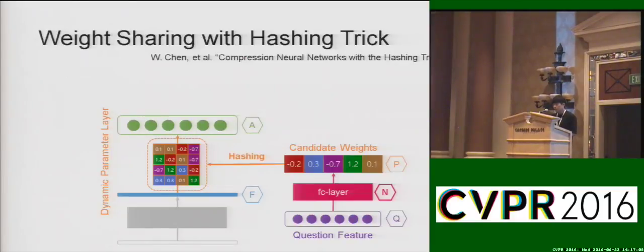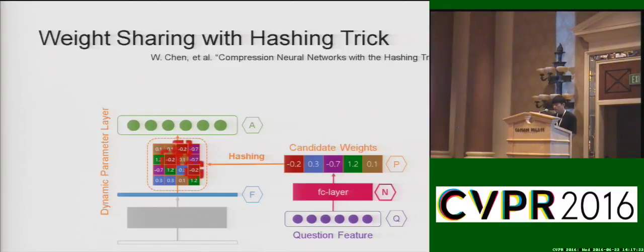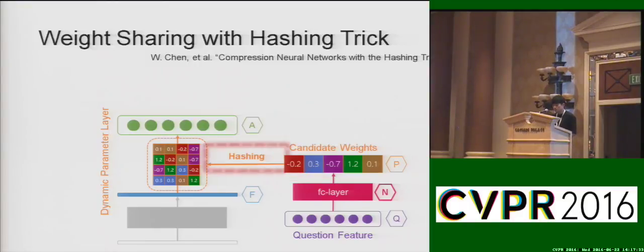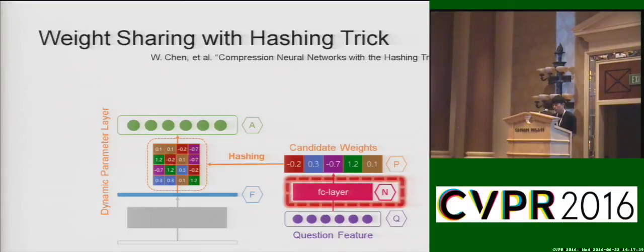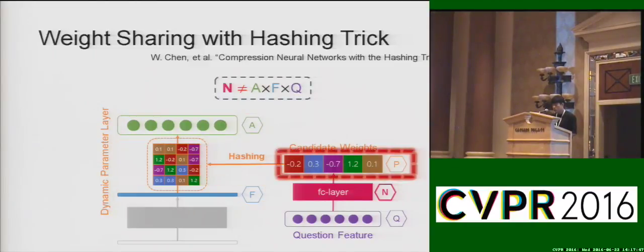To alleviate this problem, we employed weight-sharing with the hashing trick, proposed at ICML 2015. Instead of directly assigning candidate weights to the dynamic parameter layer with one-to-one mapping, we make multiple weights of the dynamic parameter layer share the same candidate weight value, where the mapping is defined by a hashing function. In this way, the number of parameters N does not depend on the input and output dimensions of the dynamic parameter layer, allowing us to control the number of candidate weights P to prevent parameter explosion.